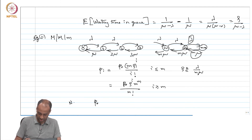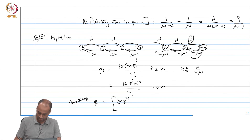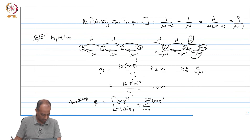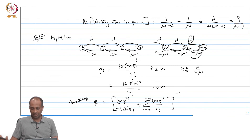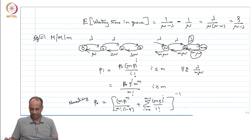Writing out the balance equation, you get P_i equals P_0 times rho^i times m^m over m! for i greater than or equal to m. You can solve P_0 by normalizing. The expression for P_0 does not simplify in any beautiful way, but these are all strictly positive numbers. From here you can calculate the expected number of customers in the system, expected system time, and expected waiting time.